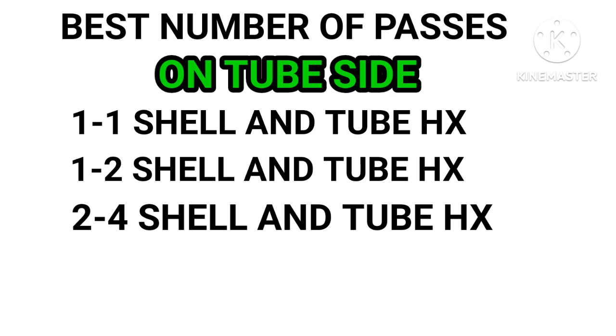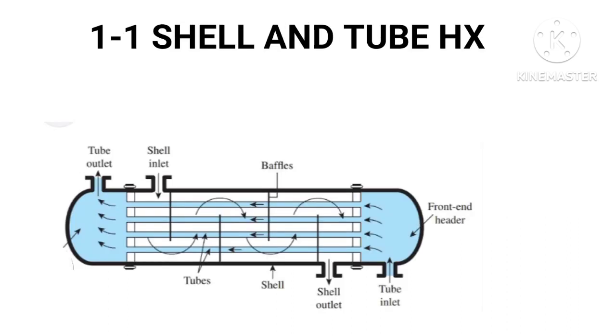We will discuss one-one shell and tube heat exchanger. The first number one stands for shell-side pass, and second number one stands for tube-side pass. So in one-one pass tube and shell heat exchanger, tube-side fluids and shell-side fluids flow once through the exchanger, and there is no need for partitions.